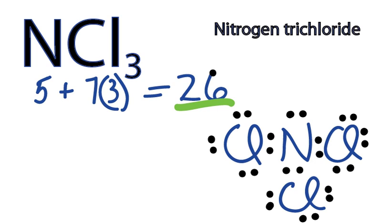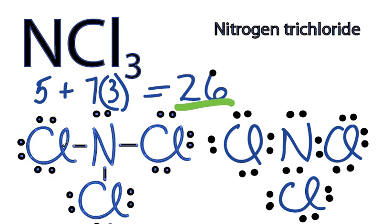We can also take and draw it as a structural formula. And that is going to look just like this right here. Pull it in for you. Lewis structure for NCl3.